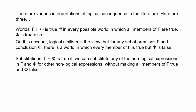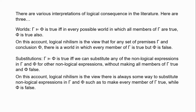Second, there is the substitutional account. On this account, gamma entails phi is true if and only if, when we keep the logical expressions fixed, we can substitute any of the non-logical expressions for other non-logical expressions without making all members of gamma true and phi false. One problem is that this makes logical consequence dependent on the richness of one's language — English, for example, does not contain expressions denoting every single object in the universe. On this account, logical nihilism amounts to the view that there's always some substitution of non-logical expressions that makes every member of gamma true while phi is false.